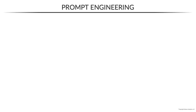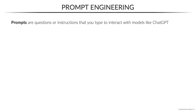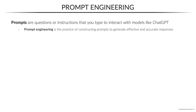One of the most fundamental things to understand about generative AI tools like ChatGPT is that the quality of the output is only as good as the quality of your input or prompt. Prompts are the questions or instructions that you type in the chat, which serve as the input for ChatGPT or similar large language models, or LLMs. How you craft your prompt is so important that an entire new field known as prompt engineering has emerged, which is essentially the practice of constructing prompts to generate effective and accurate responses.